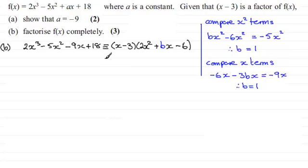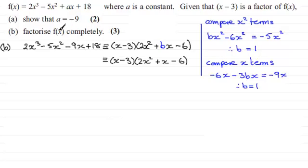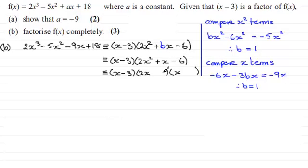So we now know this is identical to x minus 3 multiplied by 2x squared plus x minus 6. Since it says factorize completely, the quadratic factor should factorize again into two linear factors. Those are 2x minus 3 and x plus 2, giving 2x squared, and minus 3 times plus 2 gives minus 6, while 2x times 2 minus 3x gives the plus x term. So that is now factorized completely.